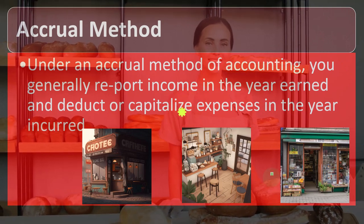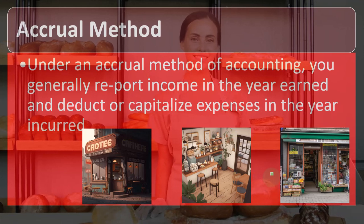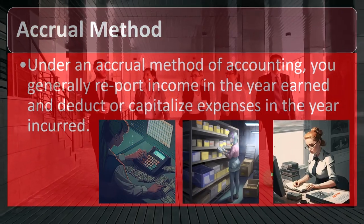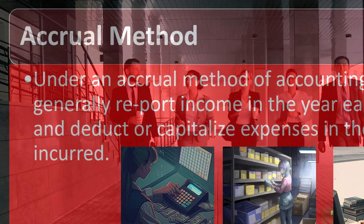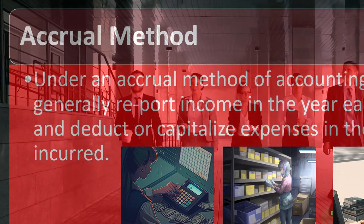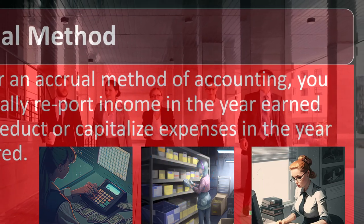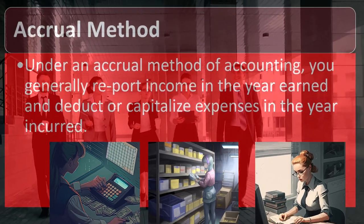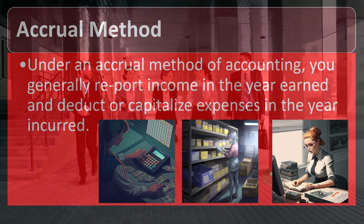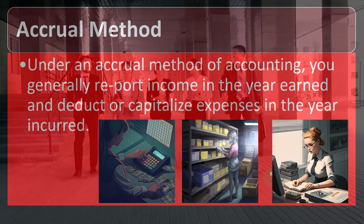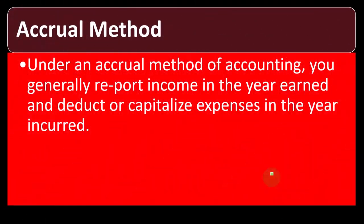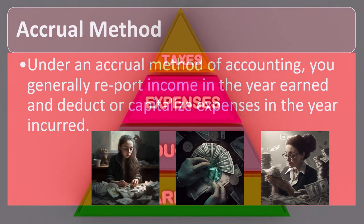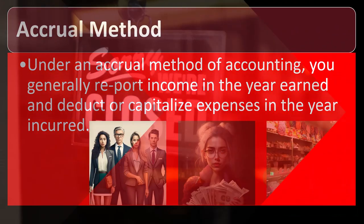Some things deviate from a cash-based method even if you're a small business — such as if you deal with inventory, or if you have a business where you do the work first and then bill the customer, dealing with accounts receivable. Tracking accounts receivable is an accrual kind of component. Other parts of the tax return, like Schedule A and above-the-line deductions, are usually in a cash-based system. But on Schedule C, you might elect a different method for the business.